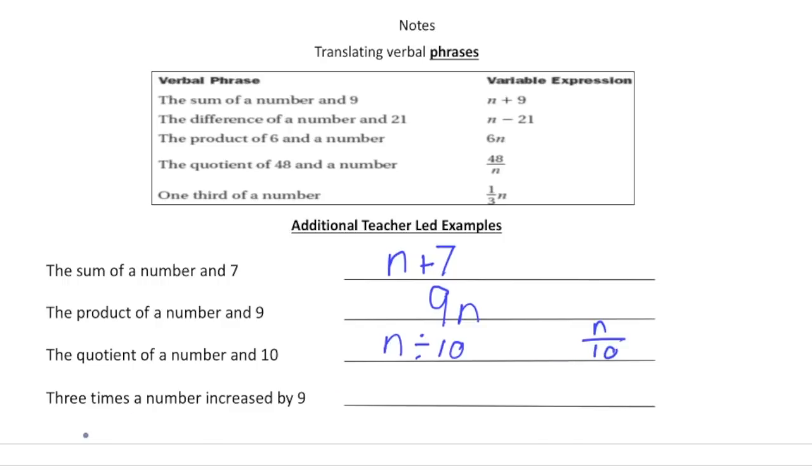And then finally it says three times the number increased by nine. So this is going to involve two different operations. Three times the number, that's going to be three n, and then that three n is going to be increased by nine, so it's going to be plus nine.